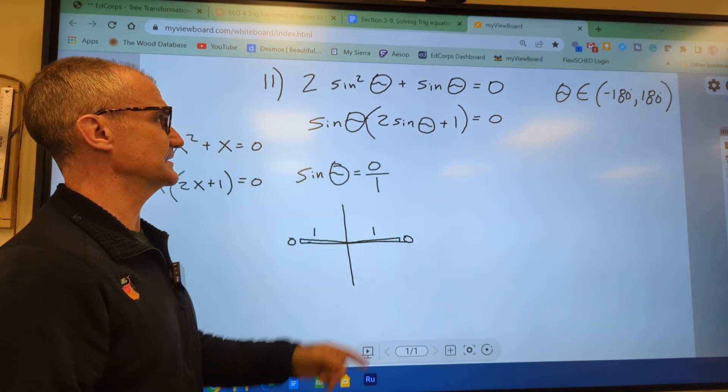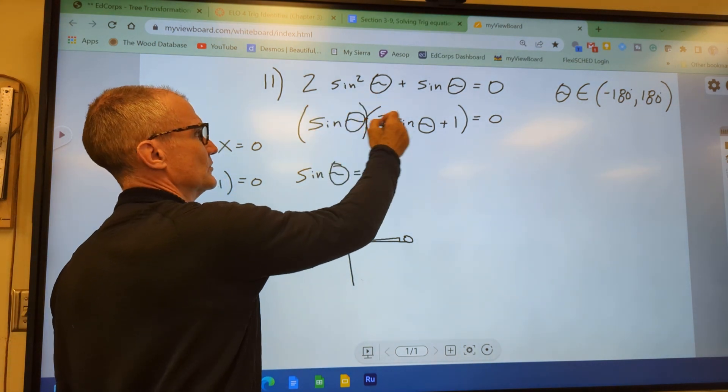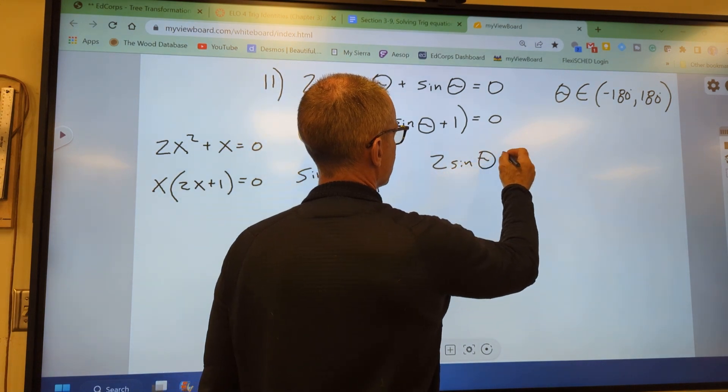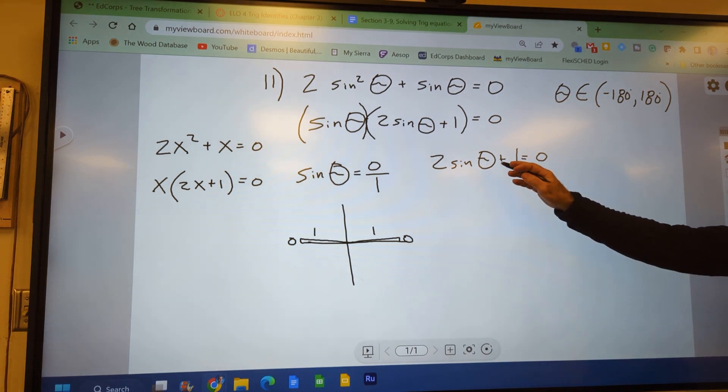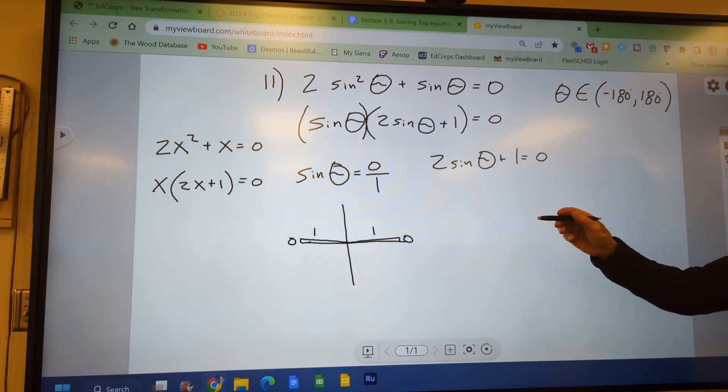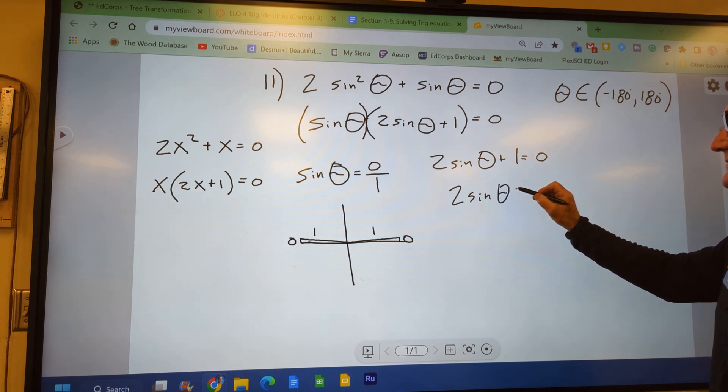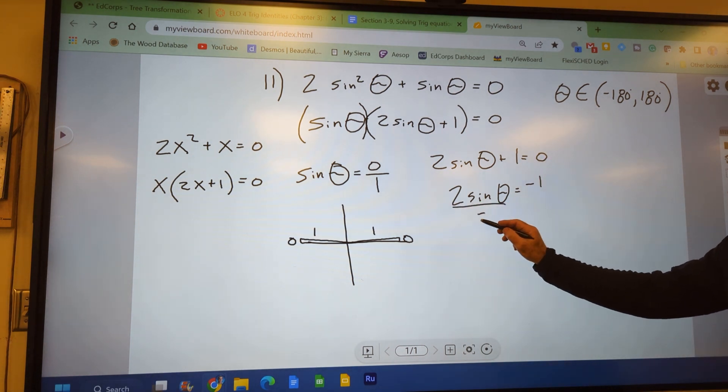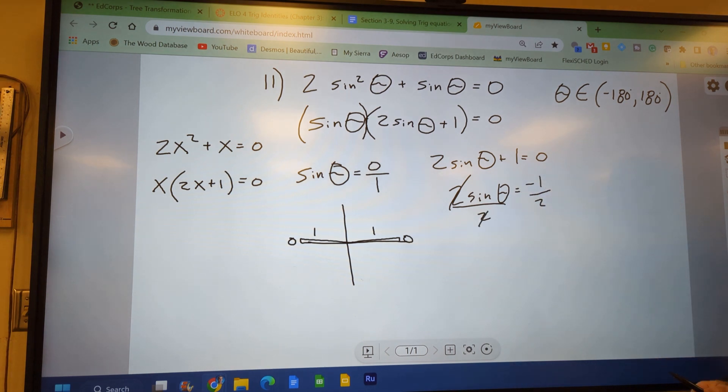And then I have to solve this piece here. So either this thing was equal to 0 or this thing's equal to 0. So 2 sine of theta plus 1 is equal to 0. Isolating my variable theta, I subtract 1 from both sides and get 2 sine of theta equal to negative 1 from subtracting that 1 from both sides. Then I divide both sides by 2. Those cancel. And I have sine of theta equal to negative 1 half.